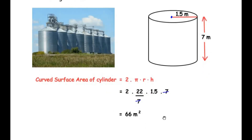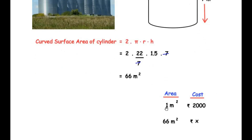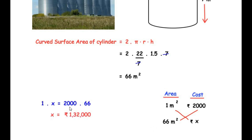Now let us find out the cost. For 1 m² curved surface area, the cost is ₹2000. So for 66 m², we take the cost as x rupees. Cross-multiplying: 66 × 2000 = 1 × x. So the cost of metal sheet used for 66 m² of curved surface area is ₹1,32,000.